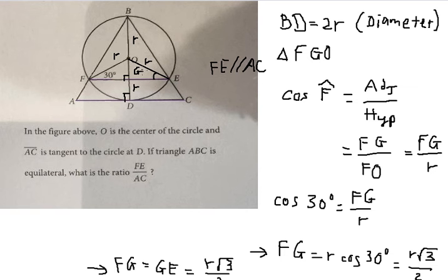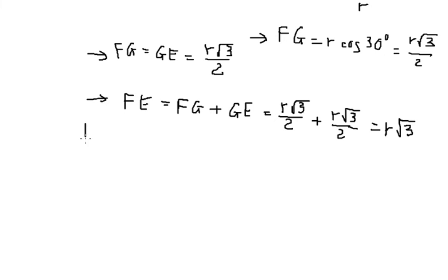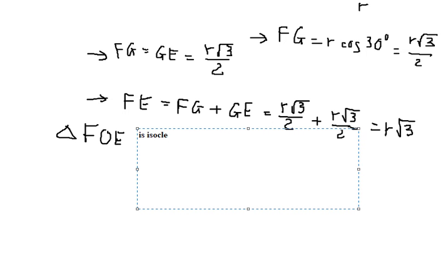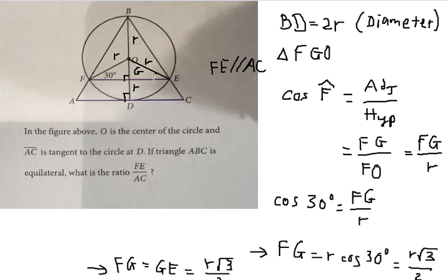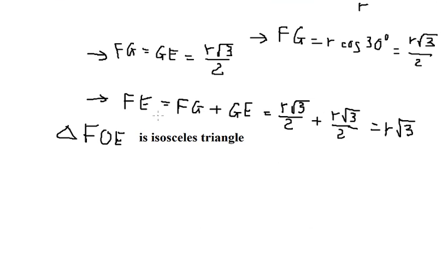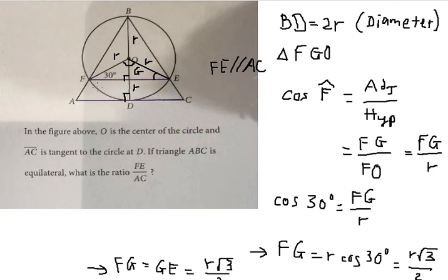Now, FG plus GE equals OE because OE is the radius of the circle. Triangle FOE is an isosceles triangle, so we have 30 degrees at both base angles. We can calculate the last angle: 180 degrees minus 30 degrees minus 30 degrees equals 120 degrees. So angle FOE equals 120 degrees.